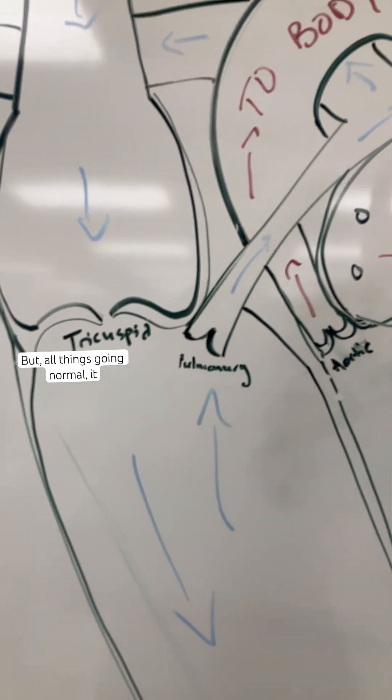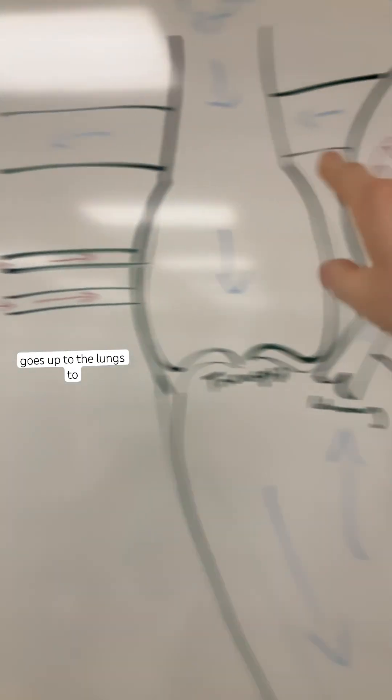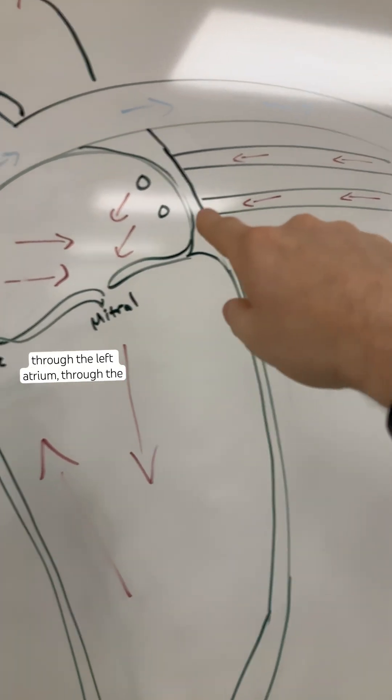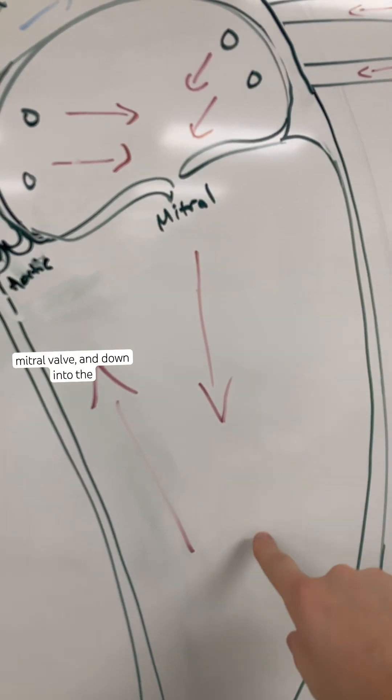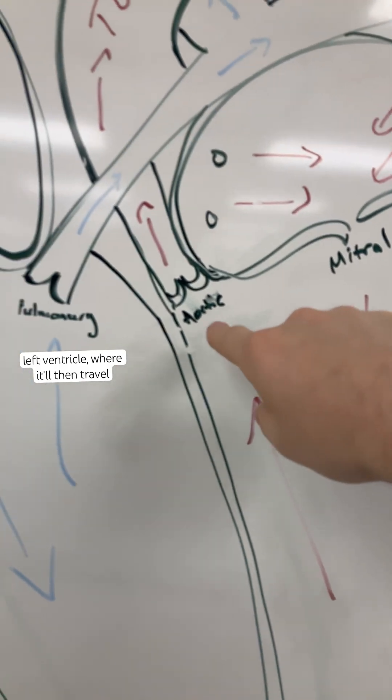But all things going normal, it goes up to the lungs to pick up oxygen, comes back in through the left atrium, through the mitral valve, and down into the left ventricle where it will then travel up to the aorta and to the rest of the body.